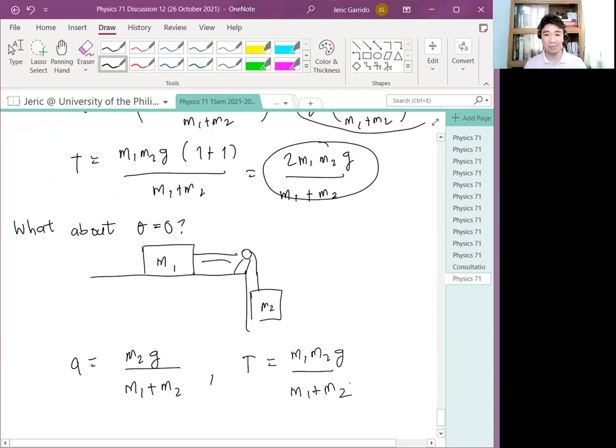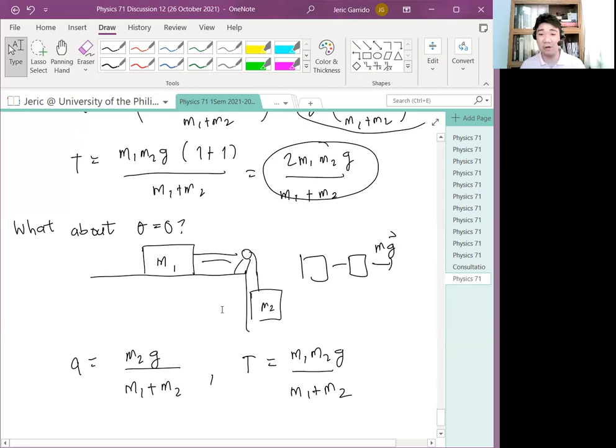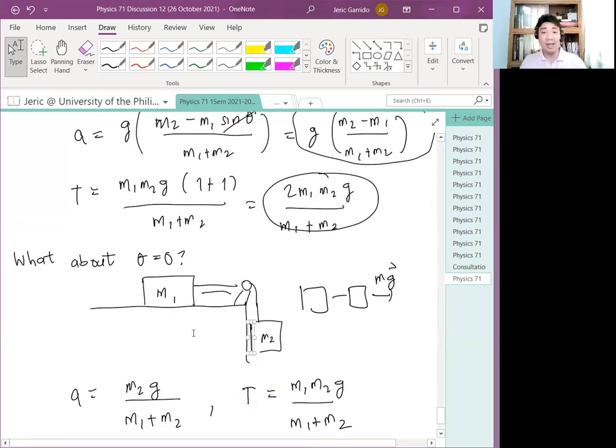Do you get this problem? What I like about this problem is that it is a generalization of different cases. One extreme case is an Atwood's machine, and another extreme case is a box on a plane and another box hanging. It's like you're doing a train system, but instead of tension, what pulls M2 is its own weight. Questions on this topic? Any questions? None.